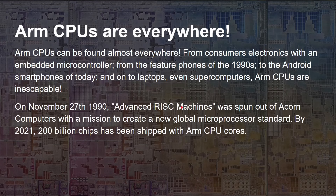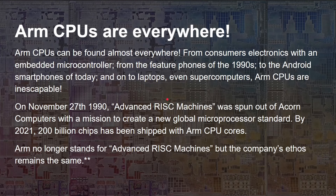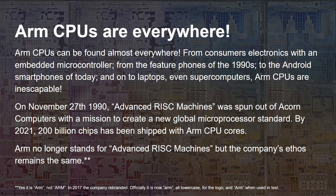On November 27th 1990, Advanced RISC Machines — ARM — was spun out of Acorn Computers with a mission to create a global microprocessor standard, which it has certainly done. By 2021, 200 billion chips had been shipped with ARM CPU cores. ARM no longer stands for Advanced RISC Machines, but the company's ethos remains the same. In 2017 the company rebranded — officially it is now Arm, lowercase for the logo, with a capital A when used in text.